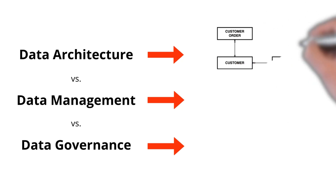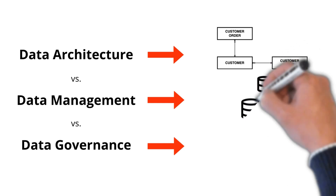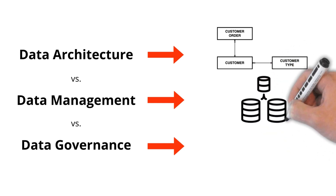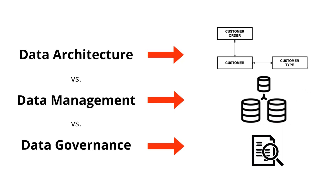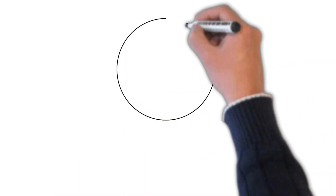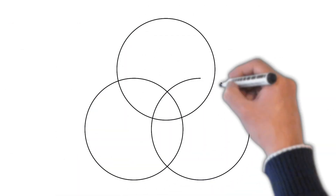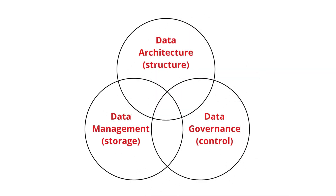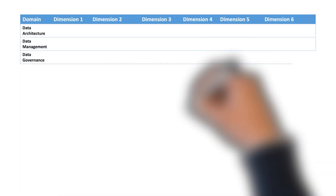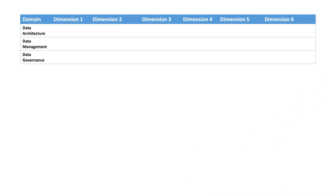In a similar way, data architecture defines a structure for the data. Data management stores and manages the data within that structure. Data governance provides the rules for changing the data structure or the data. Because governance also controls the data structure, a more appropriate model is a Venn diagram, used to create a framework with core dimensions that describe the difference between data architecture, management, and governance.